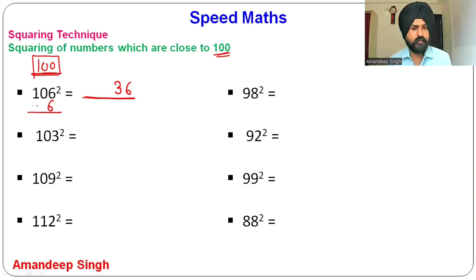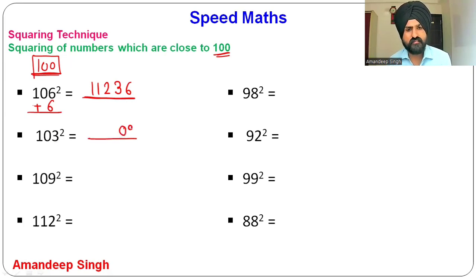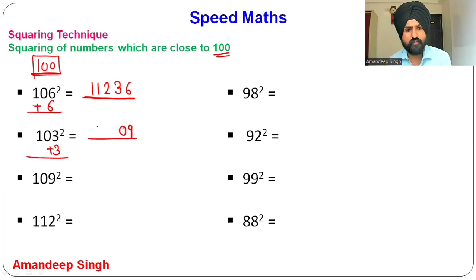For 103²: it is 3 more than 100. 3² = 9, write 09. Add 3 to 103: 103 + 3 = 106. So 103² = 10609.